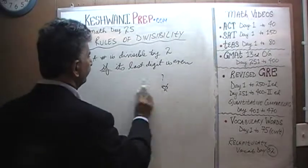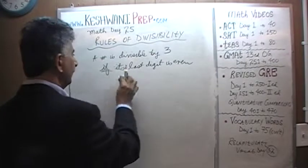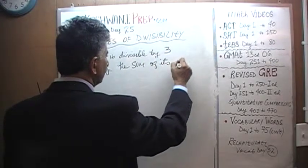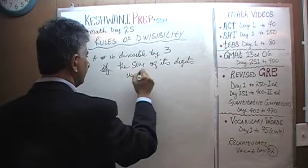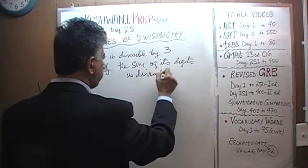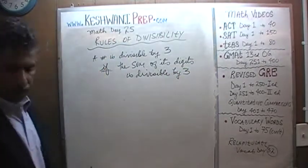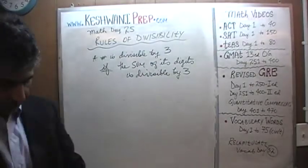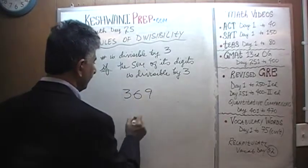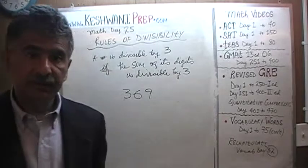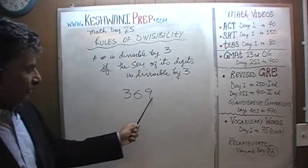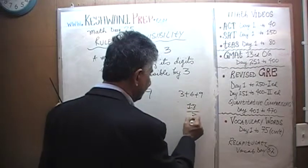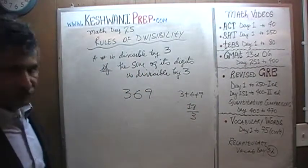Let's move on to 3. A number is divisible by 3 if the sum of its digits is divisible by 3. We add up the digits, and as long as the sum is divisible by 3, the number itself is divisible by 3. For example, 369: 3 plus 6 is 9, and 9 plus 9 is 18. Since 18 is divisible by 3, therefore 369 is divisible by 3.